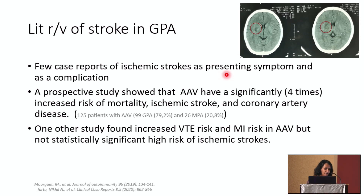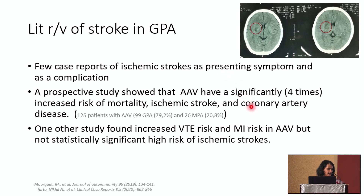Looking at the literature review on stroke in GPA: because this is not a very common disease, there are no major meta-analyses, but a few case reports describe GPA presenting as or complicated by ischemic strokes. Additionally, a few studies looked at whether ANCA-associated vasculitis carries a high risk of coronary artery disease and thromboembolic events. One prospective study showed ANCA-associated vasculitis carries a fourfold increased risk of mortality from ischemic stroke and coronary artery disease. Another study said it is only increased for venous thromboembolism and MI risk, with no statistically significant increase for ischemic stroke.